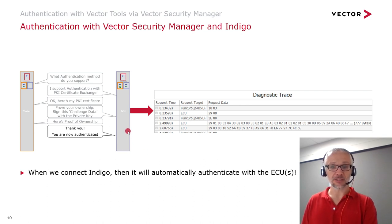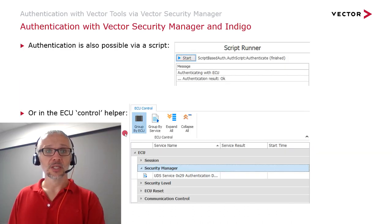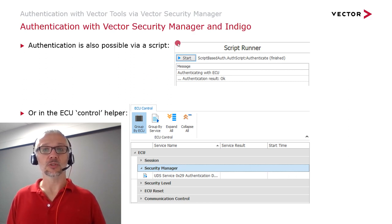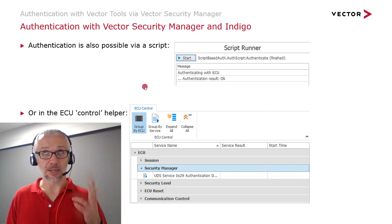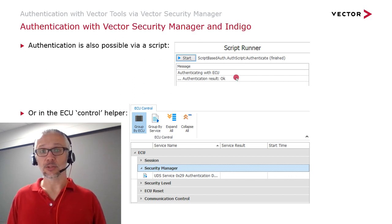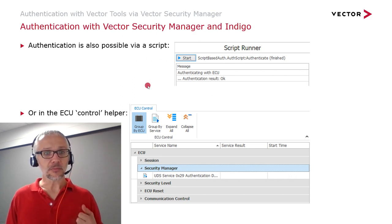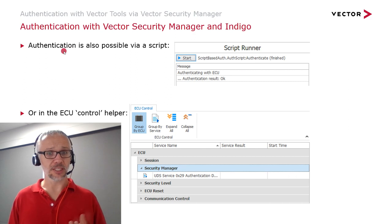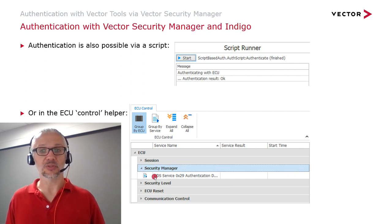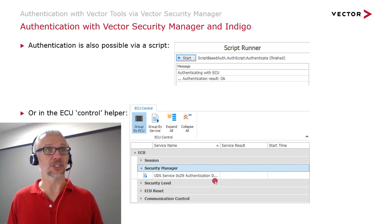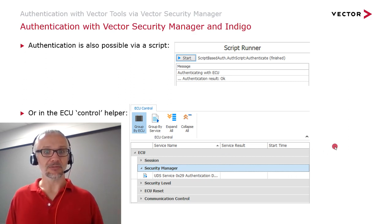It's automatic, so from the perspective of the user there's nothing to do. It's also possible to write scripts that can be run in Vector tools such as Indigo, CANoe, and CANalyzer, and these can also perform authentication. Additionally — and I didn't show this in the demo video — it's possible within the ECU control window to also access the security manager to authenticate to the level which is set with the security source configured for that particular ECU.